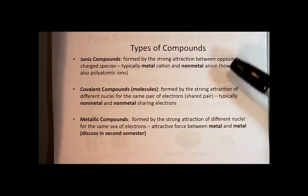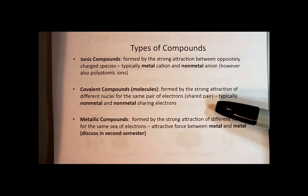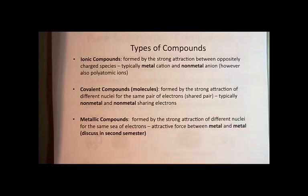Covalent compounds are also called molecules, by the way. Ionic compounds are always referred to as compounds; covalent compounds are called molecules. The word molecule indicates the atoms are held together by covalent bonds. They're formed by the strong attraction of different nuclei for the same pair of electrons. We'll look closely at this type in part two of lecture nine. For now, let's step back and take a closer look at ionic compounds.